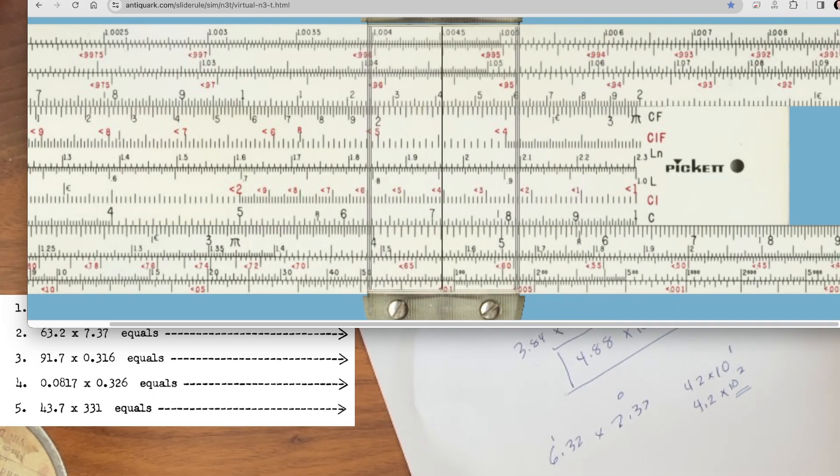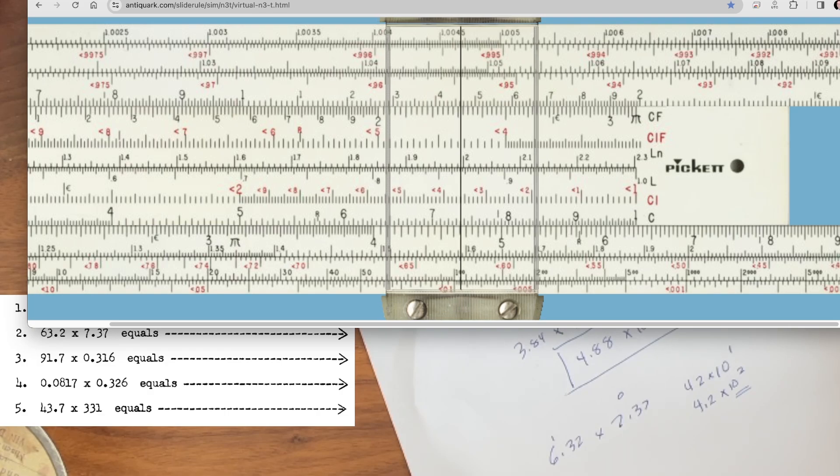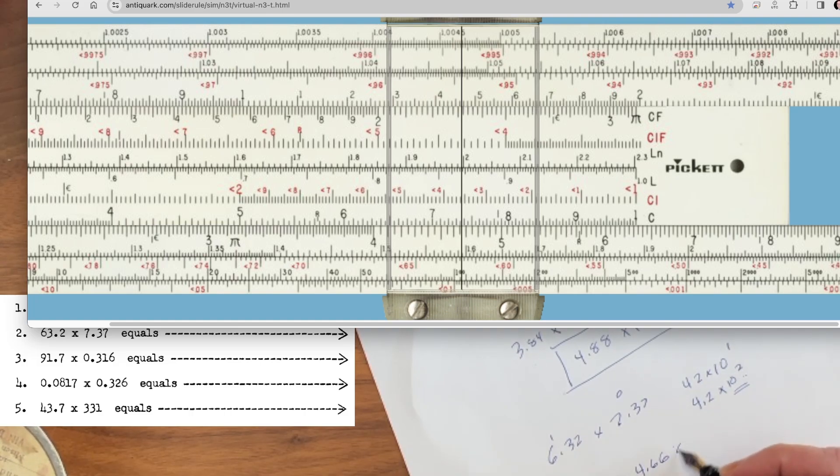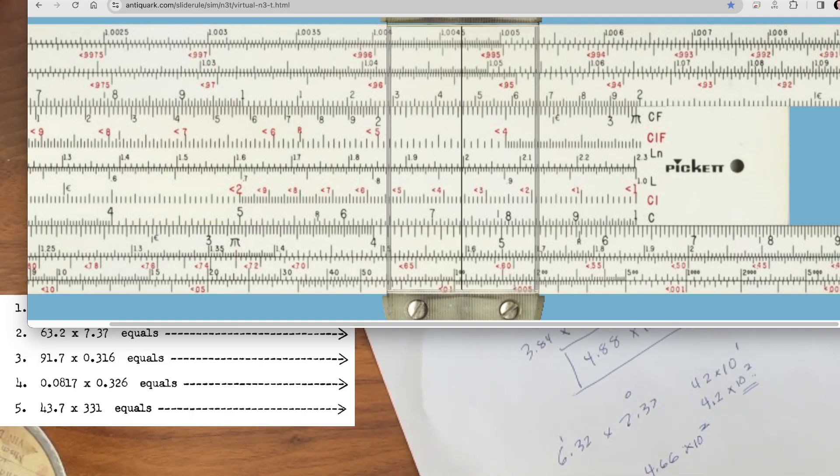So there's 7, 1, 2, 3, 3, 5, and then again, probably about halfway between 7, 3, 5, and 7, 4, 0. And then we read straight down. 4, 0.56, and about 6. So our answer will be 4.66 times 10 to the 2. Notice how close we are to our just rough estimate that we did at the start of the problem.